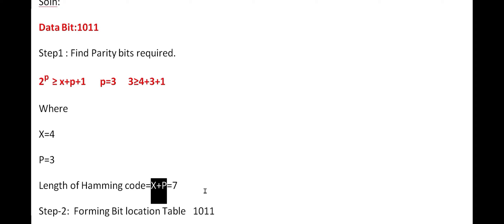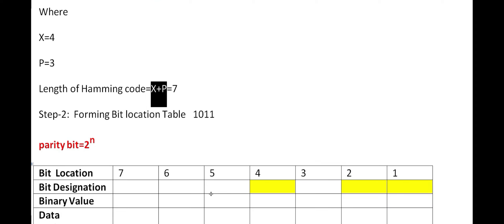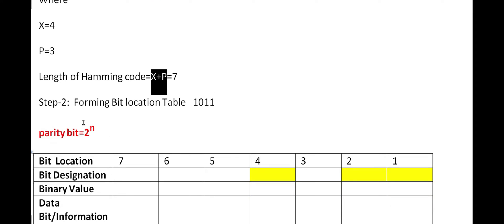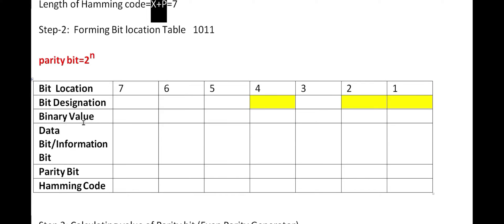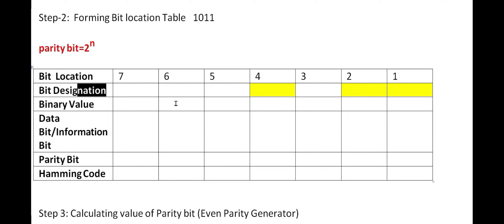Total length of the Hamming code is x + p = 4 + 3 = 7. Now after finding the length of the Hamming code, we have to form the bit location table. The first row is bit location, and we have 7 bits so locations go from 7 down to 1, or equivalently 1 through 7. Both representations are the same.